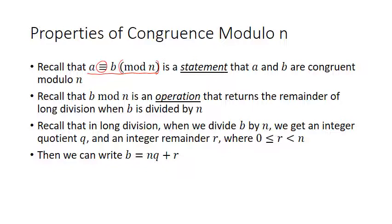On the other hand, if you use the notation without parentheses around the mod, that is actually an operation — it's the operation that returns the remainder of long division when b is divided by n. These two concepts are related but not identical, and the two types of notation are easy to get mixed up, so it's important that you understand the difference.